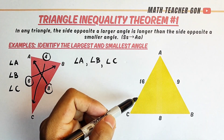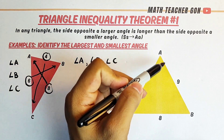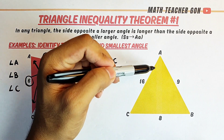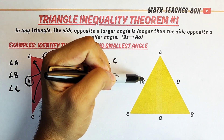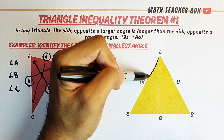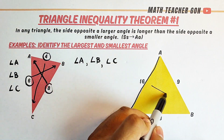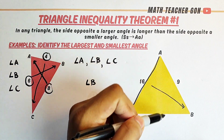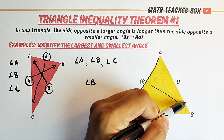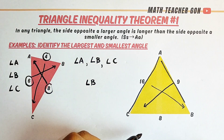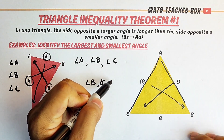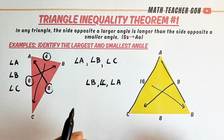Let's try the second example. We have side AC which is 16 units, side AB which is 9 units, and side BC which is 8 units. Since AC is the longest side, the largest angle is angle B. Comparing 9 and 8, side AB is second longest so angle C is the second largest. The smallest angle is angle A.